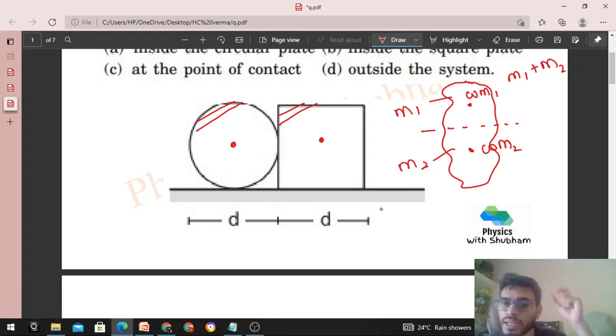So ab mai kis tarah se nikal sakta hun. Dekho, ab kafi simple hai. Joh is system ka center of mass ho ga that will be the center of mass of m1 and m2. Aap kya karo, aapko pata hai ki upar wala joh system hai uska center of mass com1 pe, so upar wale part ka pura mass com1 pe rakh dho. Ab ye point mass ban gya.